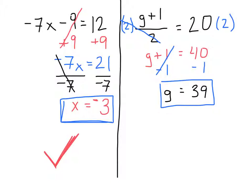To double check, take 39 and plug it back into the equation wherever g is. So 39 plus 1 equals 40, and 40 divided by 2 equals 20. This is correct.